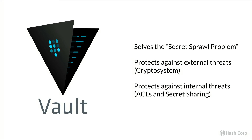Vault solves the secret sprawl problem because we have a well-defined API and all secrets go into one place. It protects against external threats using a sane crypto system — in transit, every secret is sent using TLS end-to-end, and at rest we use AES 256-bit encryption. It also protects against internal threats using ACLs to segregate who has access to what among users interacting with the same Vault cluster. And we're very excited to integrate Vault with Nomad.